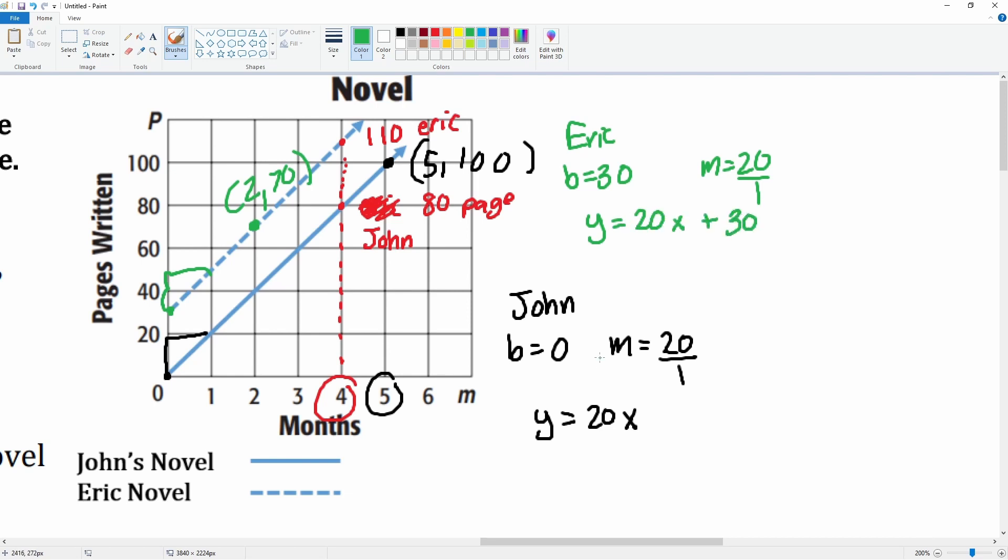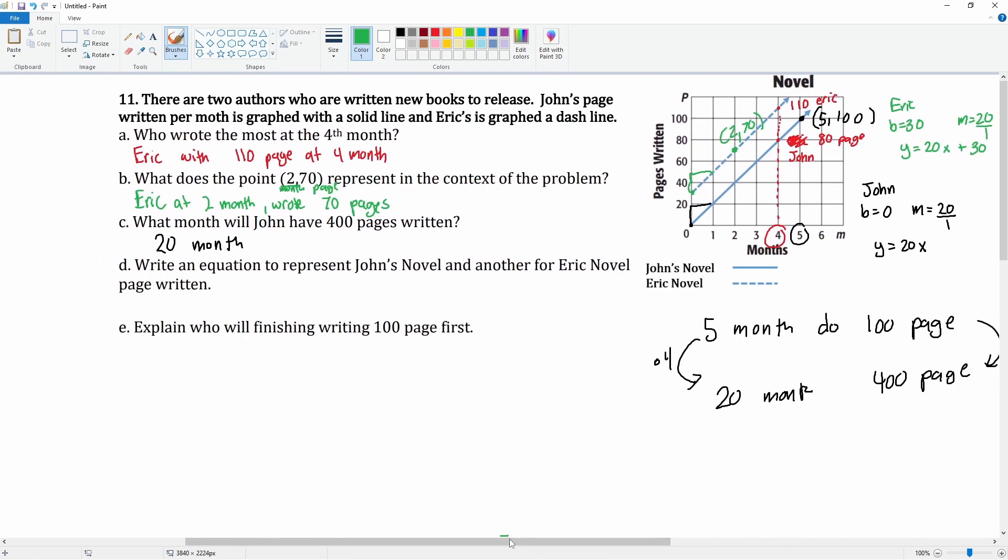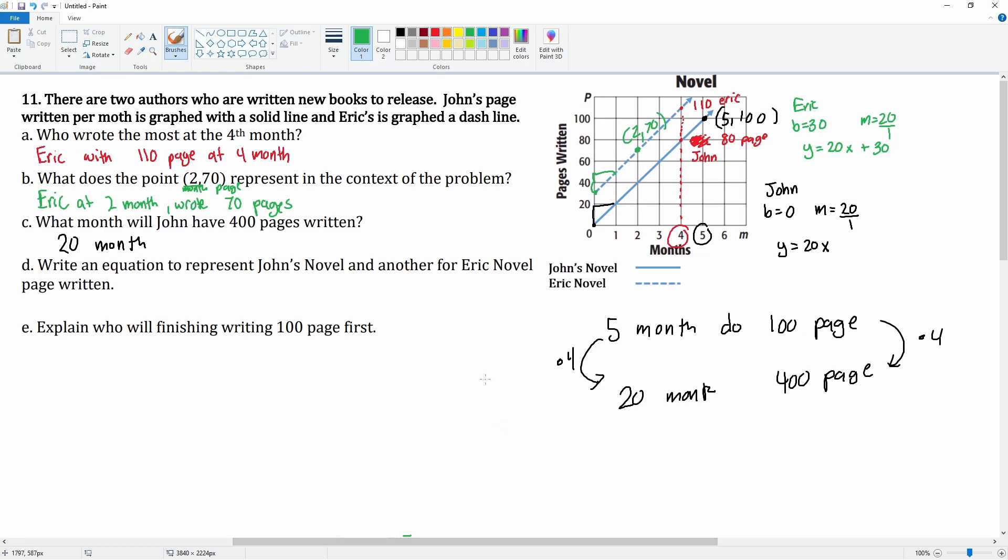So let me just transfer it over here. So we can say that for John, it is y equals 20x, and for Eric, it would be y equals 20x plus 30.